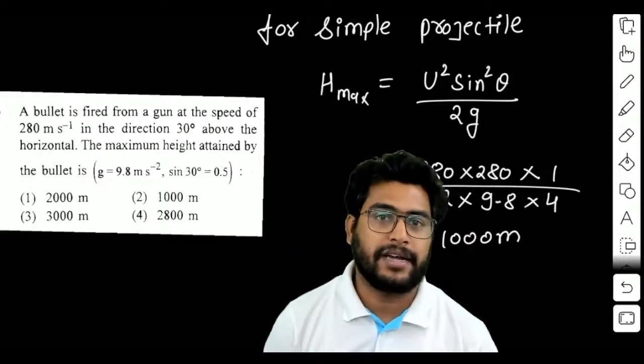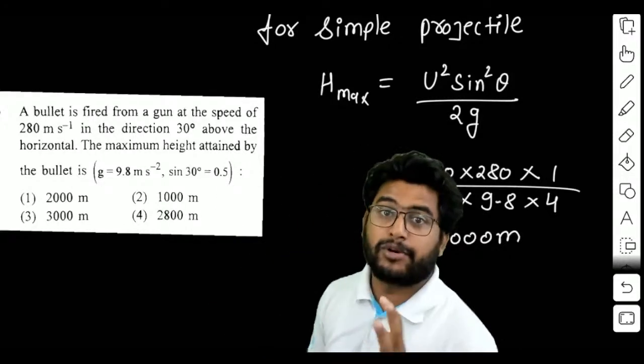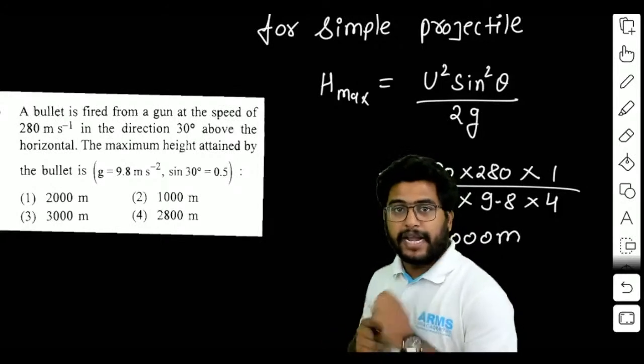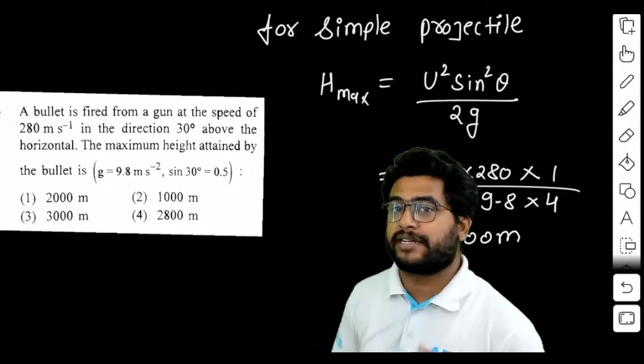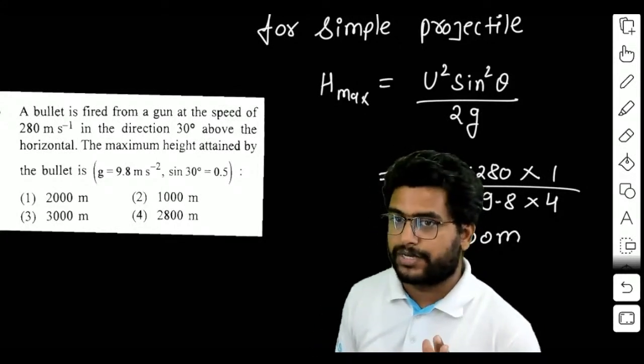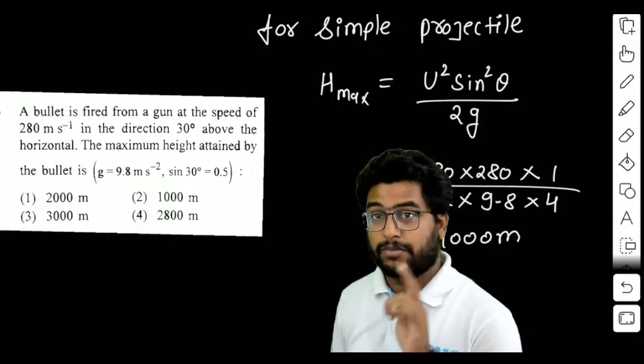In this question, a bullet is fired from a gun at a speed of 280 meters per second in a direction 30 degrees above the horizontal. This is the projection angle that we have above the horizontal.